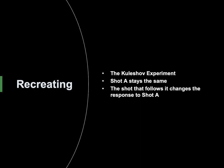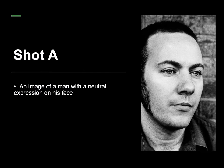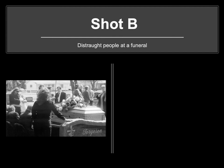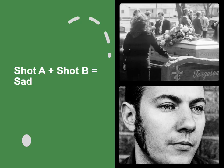Recreating the Kuleshov Experiment: Shot A stays the same, and the shot that follows it changes the response to Shot A. Shot A is an image of a man with a neutral expression on his face. Juxtapose that with Shot B — distraught people at a funeral. Within this experiment, the meaning is made in the edit, so joining Shot A with Shot B creates the third and higher meaning that the man is sad.